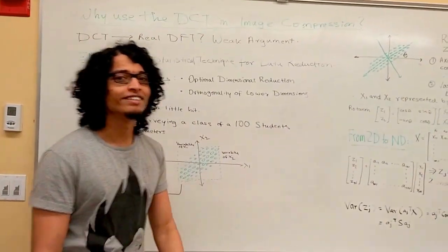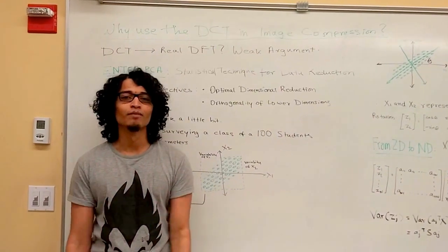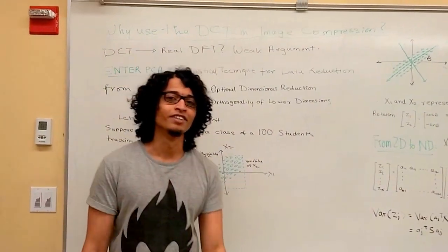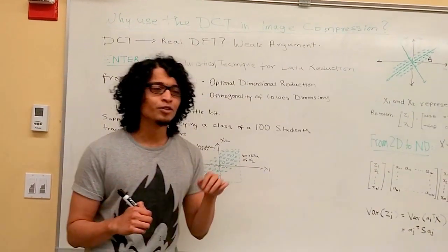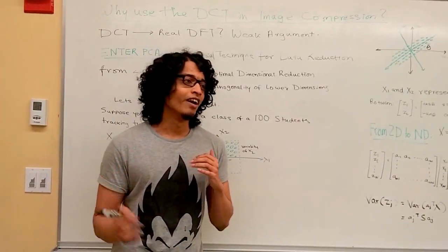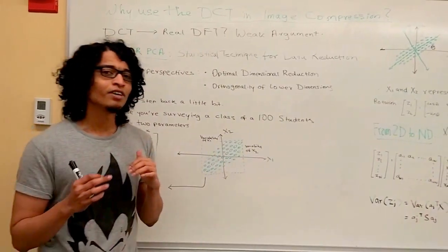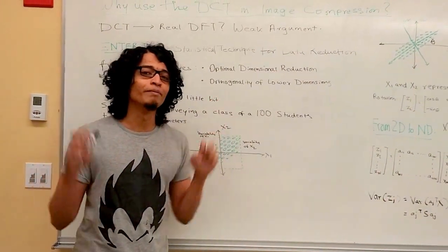Hello and welcome to this tutorial on why the DCT is used in image compression. The discrete cosine transform is often thought of as a real version of the discrete Fourier transform. That's in essence true - you don't have the imaginary sine part - but that's not really a very good argument. There's a much more compelling statistical reason for why the DCT is a so-called optimal transform, one being that of minimum error.